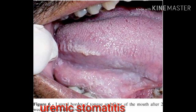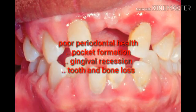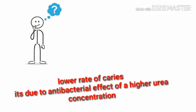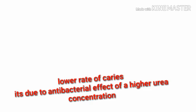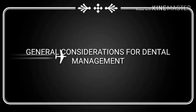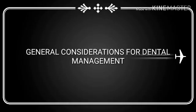Patients have poor periodontal health including pocket formation, gingival recession, and tooth and bone loss. Interestingly, they have a lower rate of caries, which is due to the antibacterial effect of higher urea concentration. Now, what are the general considerations for dental management?